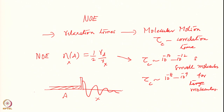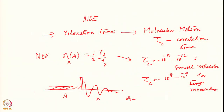What is the advantage here? Suppose A is proton and X is carbon-13 — what is the ratio γA over γX? It is 4. Therefore this NOE will be a factor of 2 enhancement. If γA equals γX, it is a factor of half, which is 0.5. So when you perturb proton and observe carbon-13, you are getting a factor of 2 enhancement in the intensity of the lines.